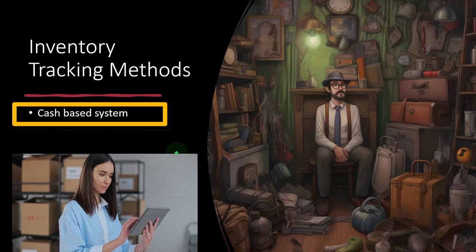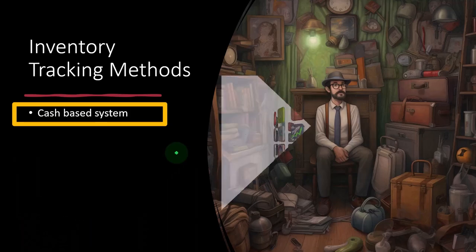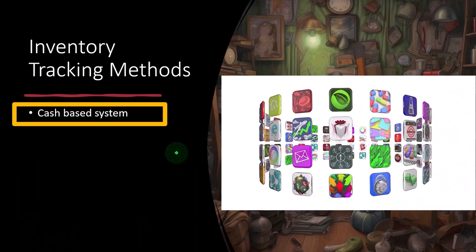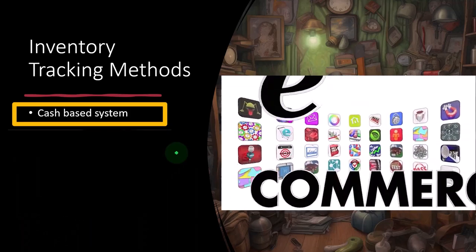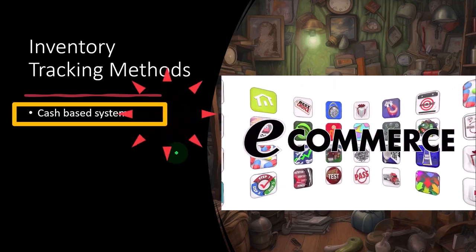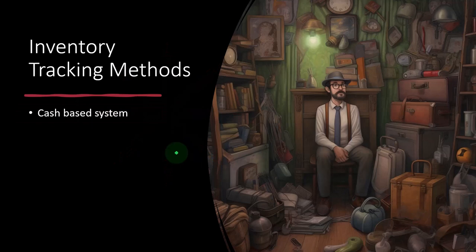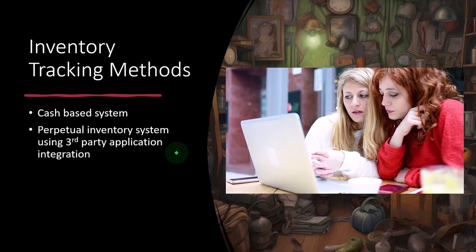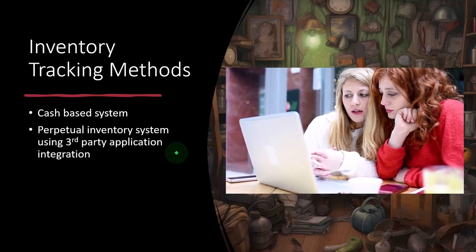What are the different kinds of tracking methods we might use in an e-commerce situation to track our inventory and the related expense of cost of goods sold? One method is the easiest: we could use a cash-based system and simply expense the inventory as we purchase it, using cost of goods sold as the expense account. I'll list them all out first and then go into each in more detail.